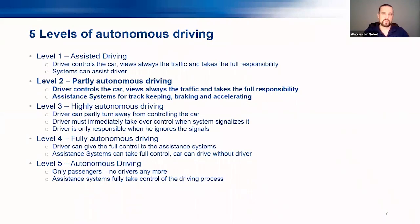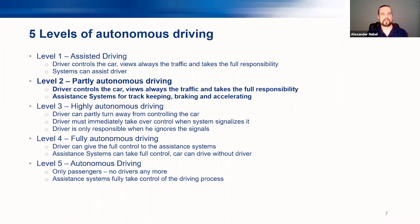But we're not just looking for cruise control — we want a fully autonomous driving car. There are five different levels. Level one is assisted driving, where the driver is in control. Level two, where we are now, is partly autonomous driving — the driver still controls the car and monitors traffic, but we have assistance systems for lane keeping, braking, and accelerating. This is what most cars today have, but there are still three levels to go.